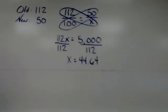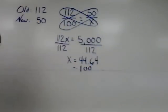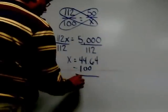Now remember after this step we subtract 100, and when I do 44.64 minus 100 the result is negative 55.36.